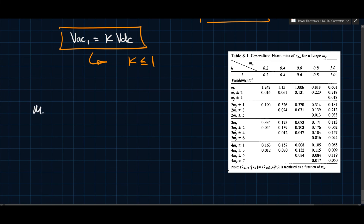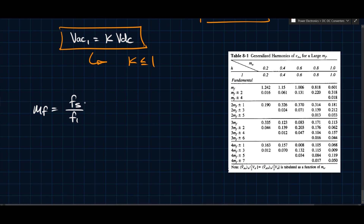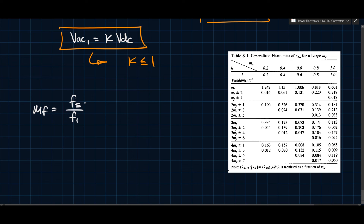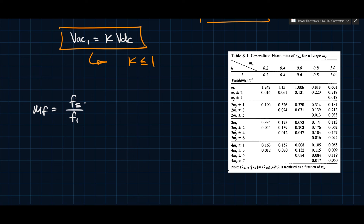We define MF as the frequency modulation index: MF equals FS over F1, where FS is the switching frequency and F1 is the fundamental frequency. So we have the amplitude modulation ratio K, and MF as the frequency modulation index. This ratio tells us how much larger the switching frequency is than the fundamental. Usually we want MF to be much larger — typically 20 to 30 times, although 10 times is where you could start to say it is sufficiently large.